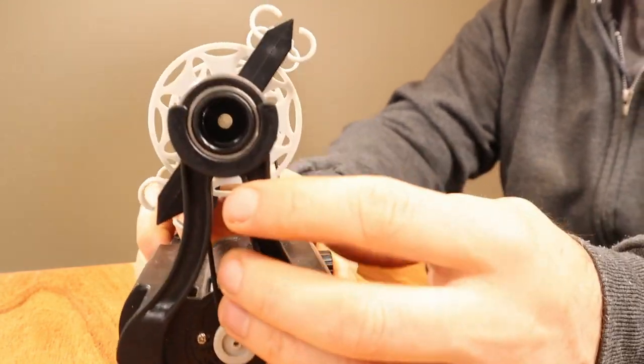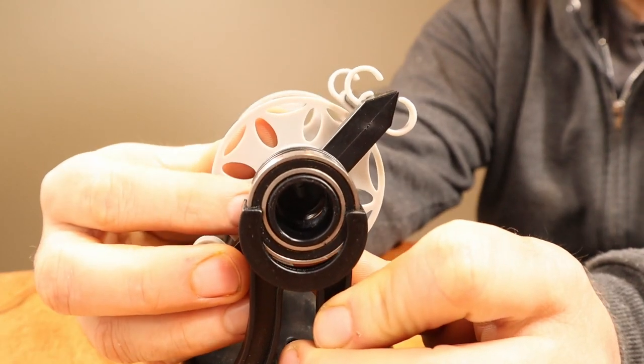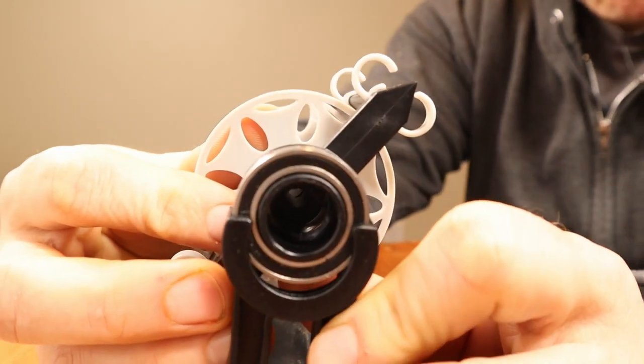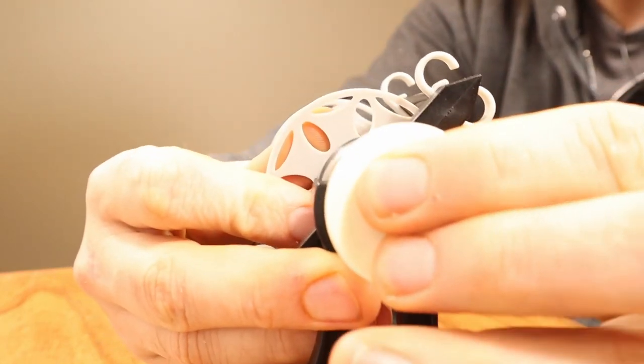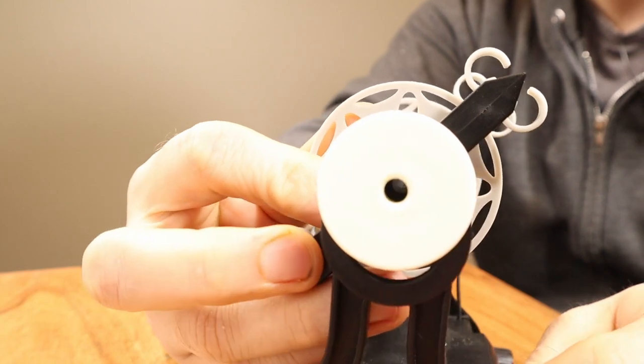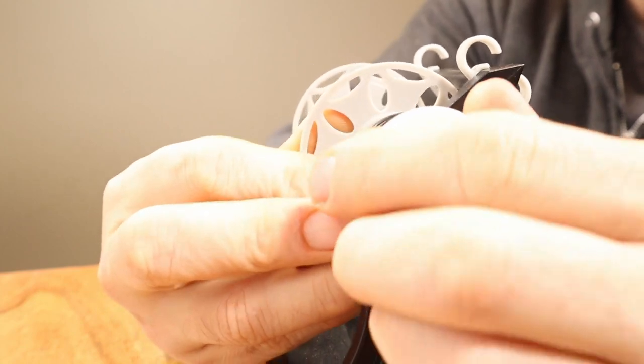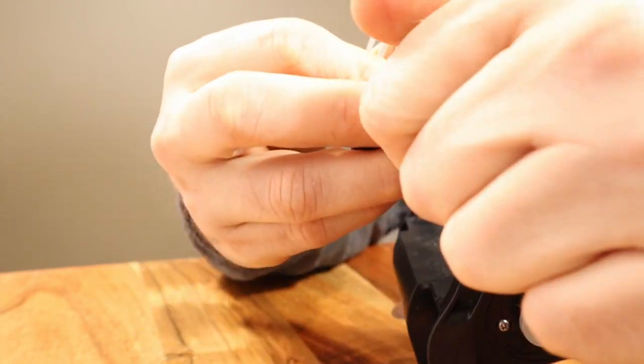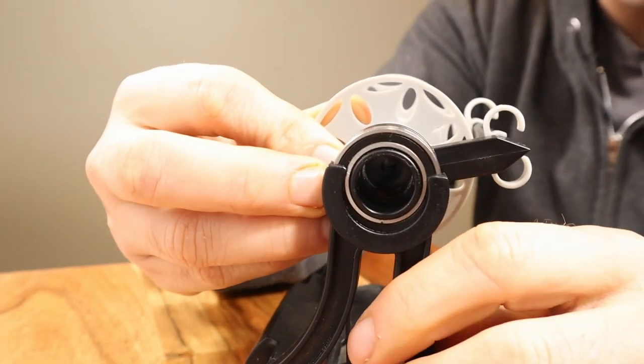So the first one is that sometimes when the Nano 2 ships, if you look at the front bearing, it'll look like this. Or if the reducer is installed, it might be a little harder to see, but basically what's happening in some of them is during shipping, let me take this back off so you can see better.